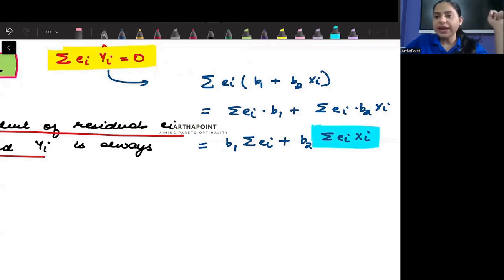There is no correlation between error and the Xs. We have proved this, right? So this will be zero.